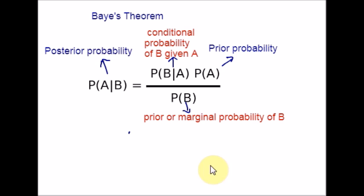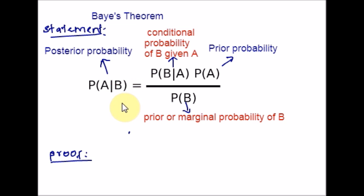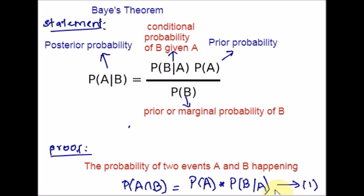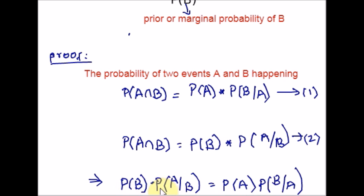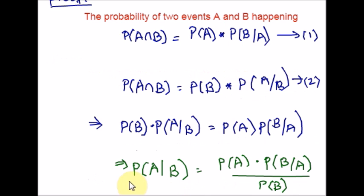Now let us see the proof of Bayes' theorem. The probability of two events A and B happening — probability of A intersection B — equals probability of A times the probability of B given that A has occurred. Let this be equation 1. On the other hand, the probability of A and B is also equal to probability of B times the probability of A given B. Let this be equation 2. The left sides of both equations are the same, so equating the right sides and dividing throughout by probability of B gives us Bayes' theorem. This is the basis of statistical inference.